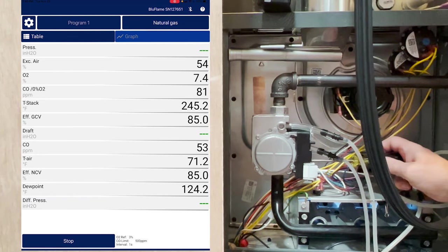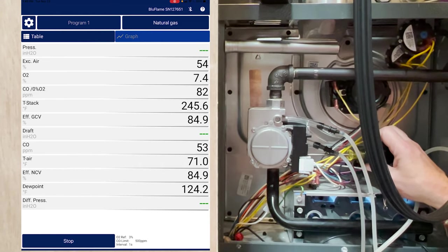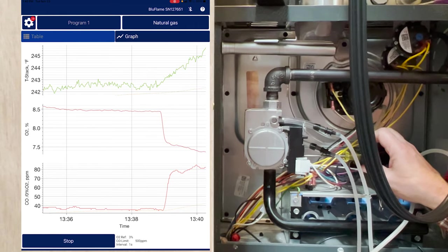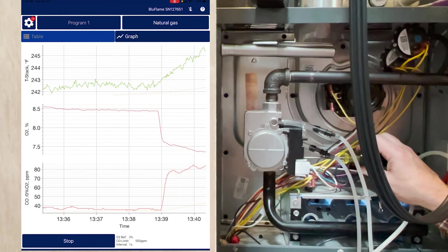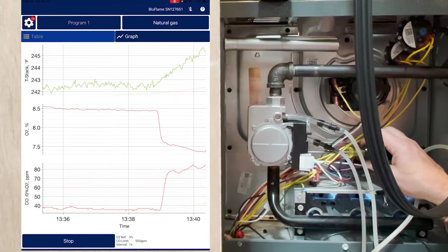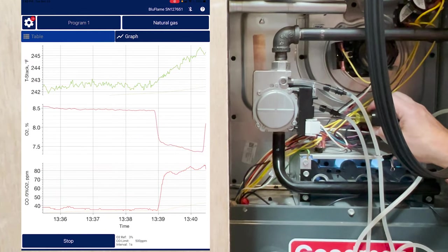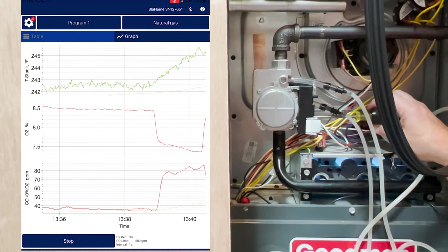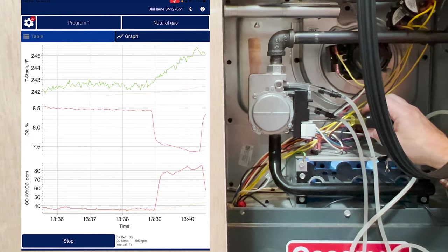Now, if I lower this back down here, we'll just back it back down a little bit. We'll go back to the graph again. You'll see that the O2 will start to dial up, and again, it's going to take just a minute for it to read. So there goes my O2 climbing back towards the eight, eight and a half percent we were at before, and there goes my CO back down, and obviously you can see my stack temperatures on the way down also.